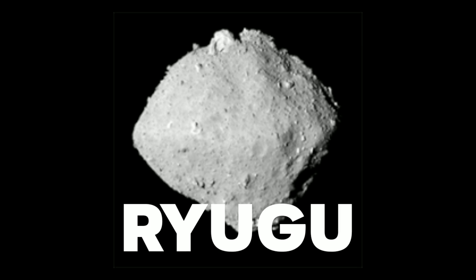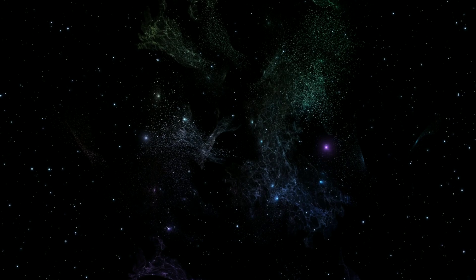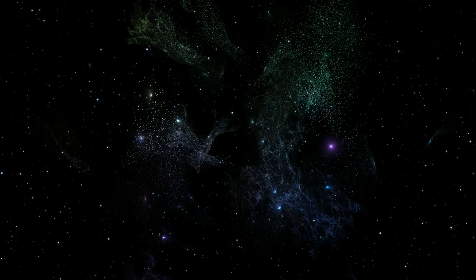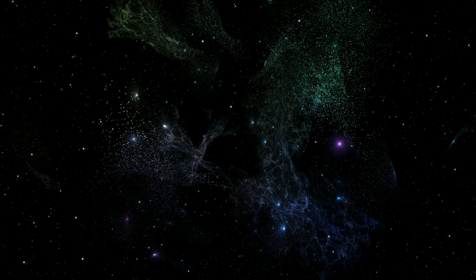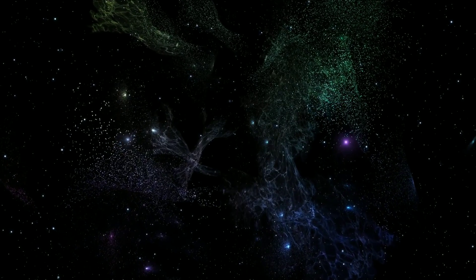Natural material from the asteroid Ryugu was brought back to Earth in 2020 after a six-year mission to the celestial body around 300 million kilometers away.